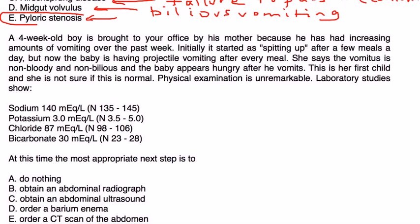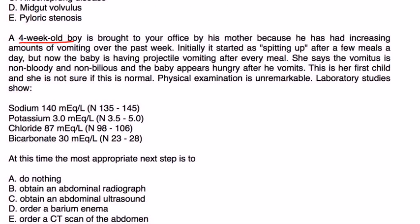One more. A four-week-old boy is brought to your office by his mother because he has had increasing amounts of vomiting over the past week. Initially it started as spitting up after a few meals, but now the baby is having projectile vomiting after every meal. She says that the vomitus is non-bloody, non-bilious, and the baby appears hungry after he vomits. This is her first child and she's not sure if this is normal. Physical exam is unremarkable. Lab studies show sodium is normal, potassium is low, chloride is low, and bicarb is a bit high.